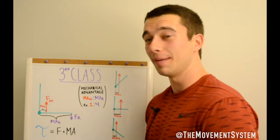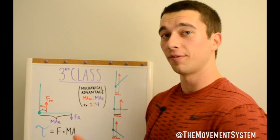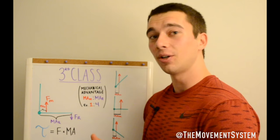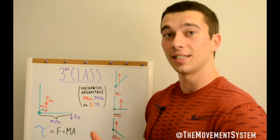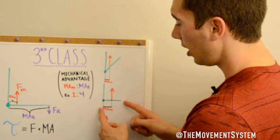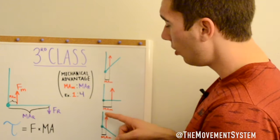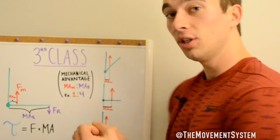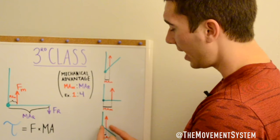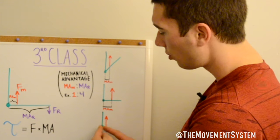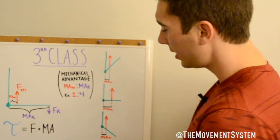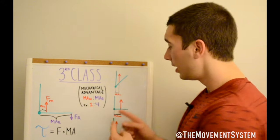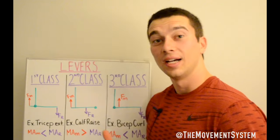One more example: when lowering a bicep curl from 90 degrees down, do we increase or decrease the moment arm of the muscle? We know the moment arm of the muscle is at its longest at 90 degrees. As you lower eccentrically, that muscle force moves closer to the fulcrum in terms of horizontal distance, so the moment arm of the muscle decreases as you increase the angle of the elbow joint.